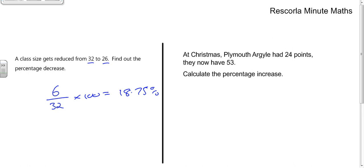Now at Christmas, Plymouth Argyle had 24 points and now they've got a mighty 53 points. So the actual increase is 53 take away 24, which equals 29. So 29 divided by the original, which is 24, then times by 100. If we do 29 divided by 24 times by 100, we get 120.8. So it is possible to get above 100%, and that's if it's more than doubled.